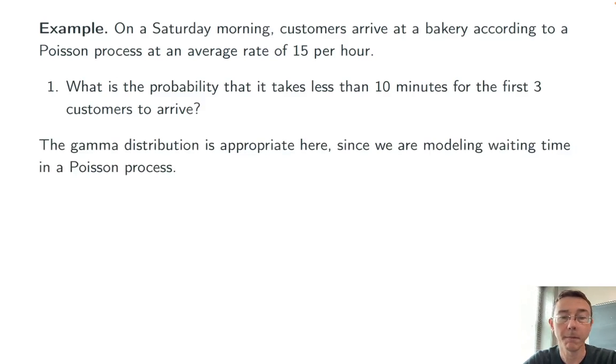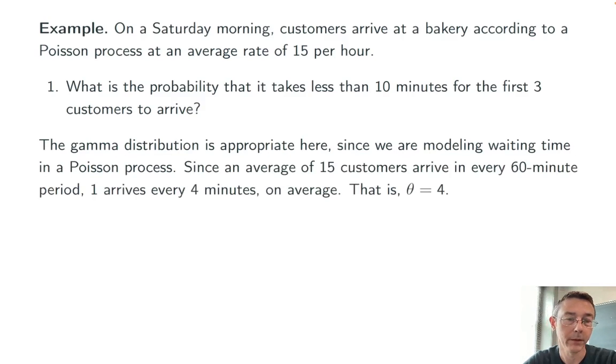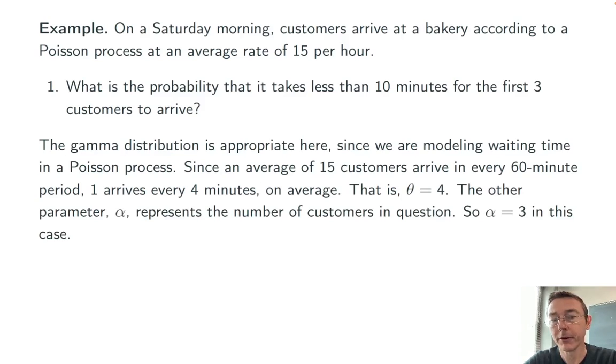The gamma distribution is going to be appropriate here since we're modeling waiting time in a Poisson process. Since 15 customers arrive every 60 minutes, one arrives every 4 minutes on average. So that's our first parameter. Theta is equal to 4 here, the average time between occurrences. The other parameter here, alpha, is the total number of occurrences in question, the number that we're interested in. So here alpha is equal to 3.